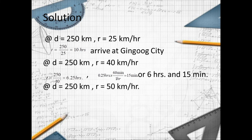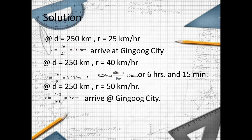Next, at distance of 250 kilometers and rate of 50 kilometers per hour, T equals 250 over 50, which equals 5 hours. So you would arrive at the destination in 5 hours.